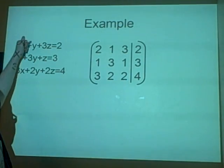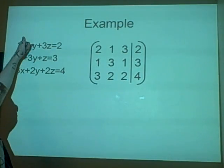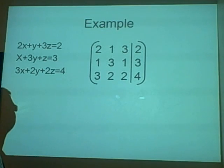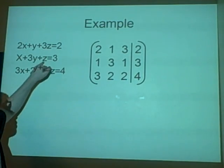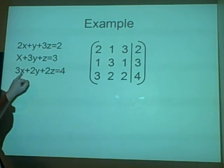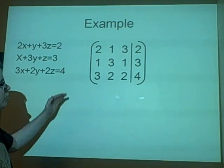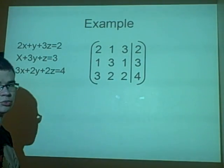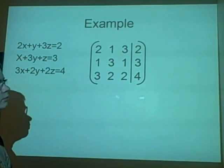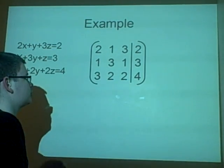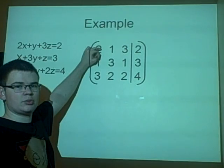Right now, this is our equation to start off with. 2x plus y plus 3z equals 2, x plus 3y plus z equals 3, 3x plus 2y plus 2z equals 4. And we've put it into here like I showed you before. And we've got a 3 by 3. Now first of all, what we want to do is we want to get the 1 in the top up here.